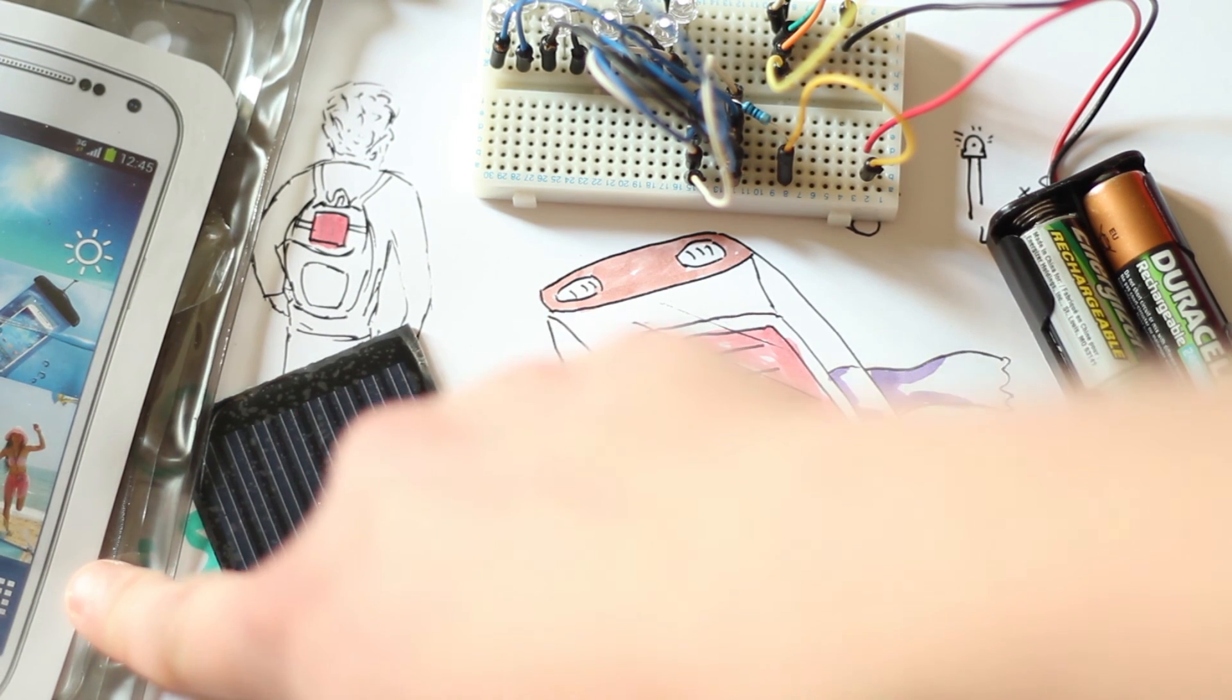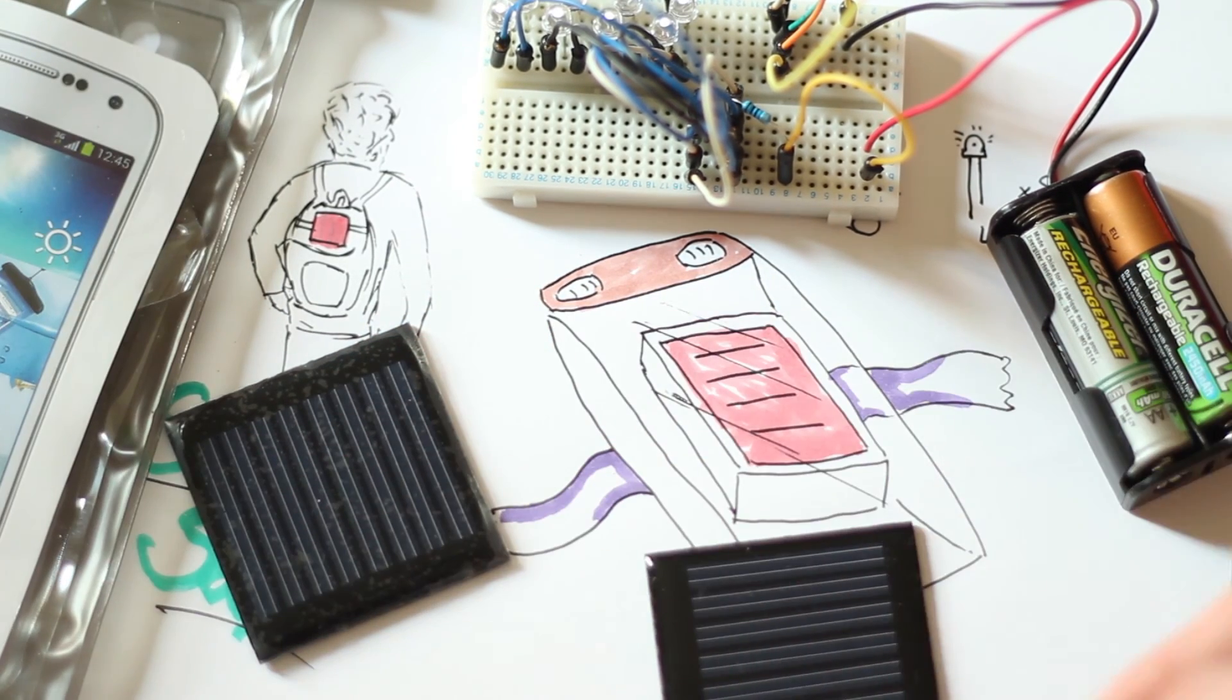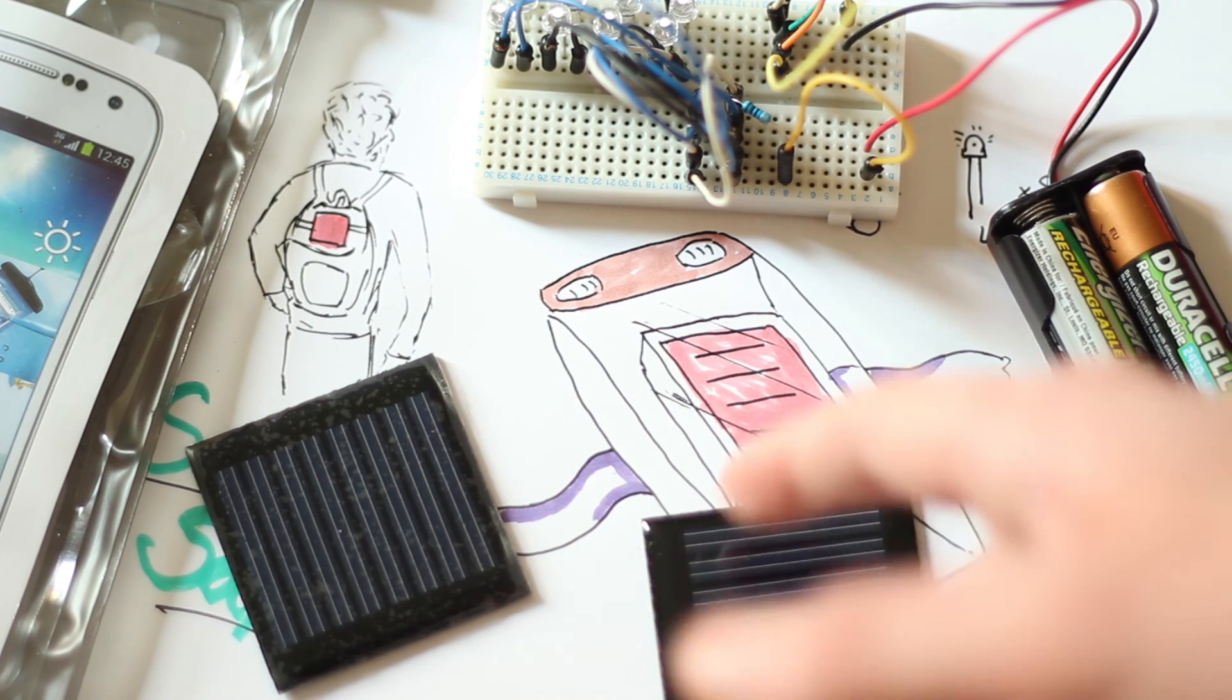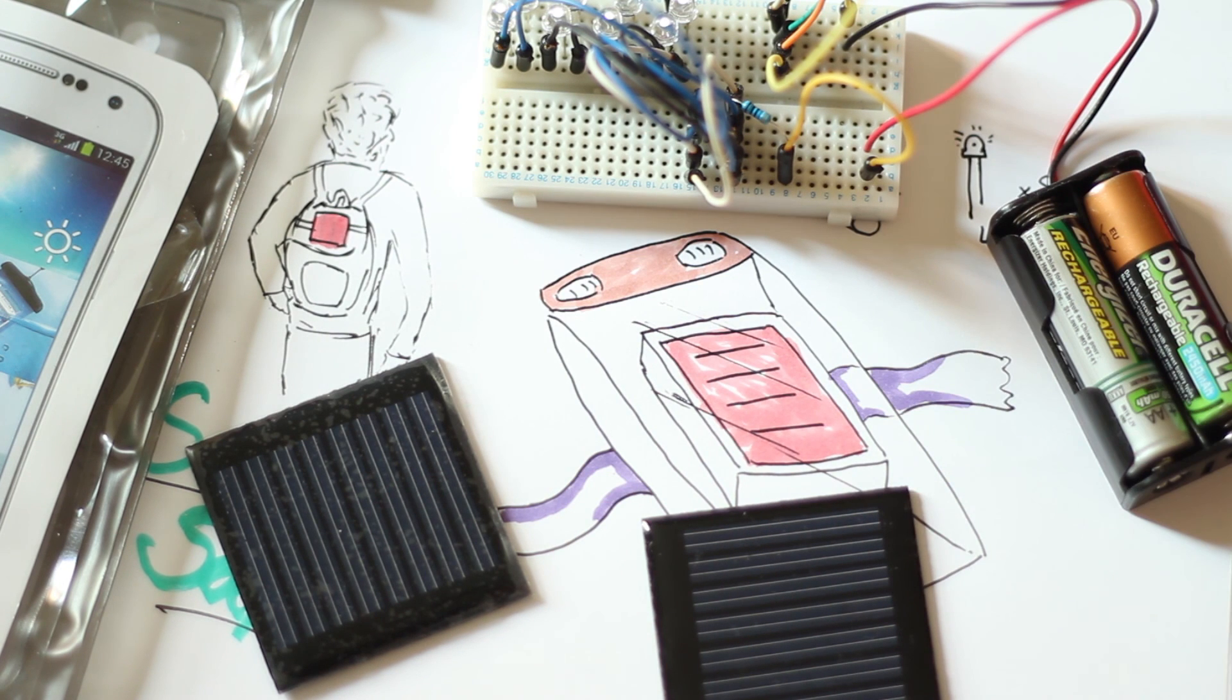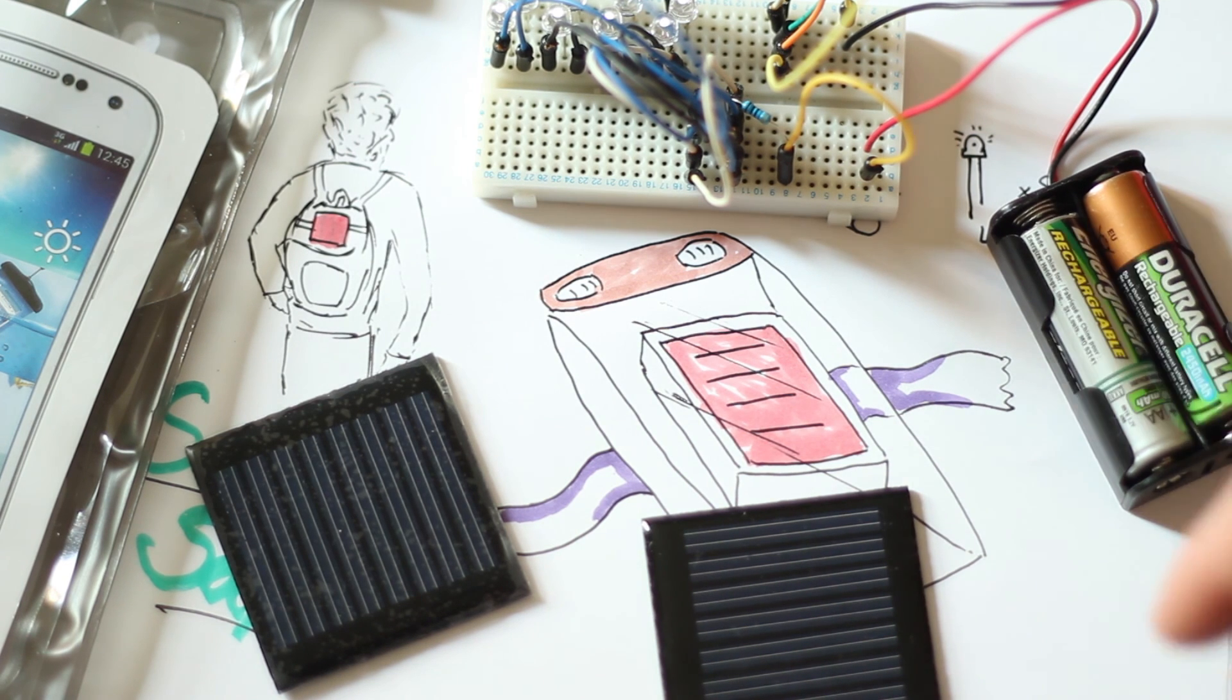This case for the phone was less than two pounds. The solar panels were two pounds. The LEDs are nothing really.